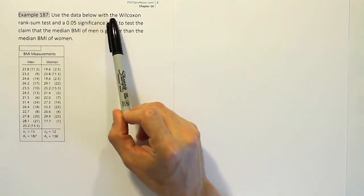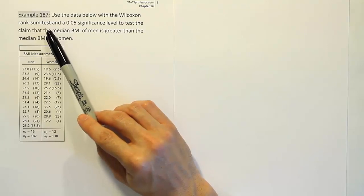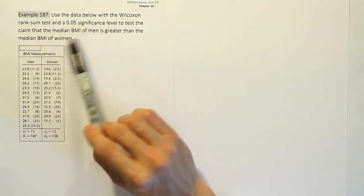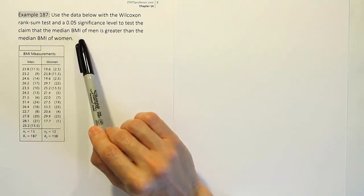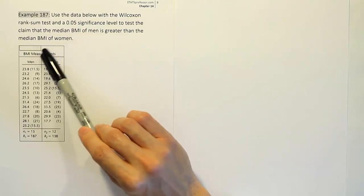Example 187. Use the data below with the Wilcoxon rank sum test and a 0.05 significance level to test the claim that the median BMI of men is greater than the median BMI of women.